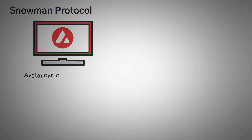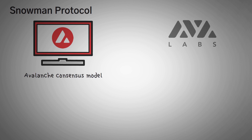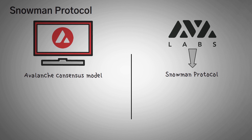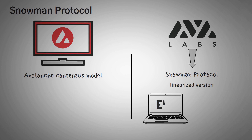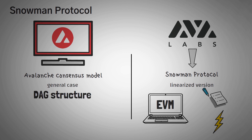Moving on from the infrastructure, let's get into a specific detail about the network. The main primary network uses the Avalanche consensus model, but Ava Labs created an even more powerful consensus model called the Snowman Protocol. The quick difference between the Snowman Protocol and the generalized Avalanche Protocol is quite small but powerful. The Snowman Protocol is the linearized version of Avalanche, optimized for smart contracts and high throughput so it can fit the needs of the Ethereum virtual machine. On the other hand, Avalanche is a more general use case implemented using a DAG structure, which is also seen on the X-Chain.